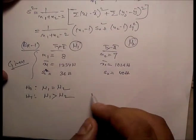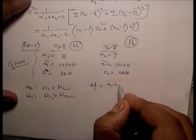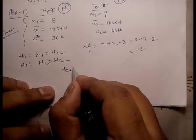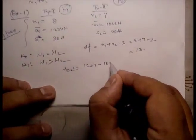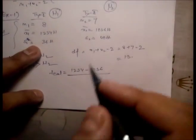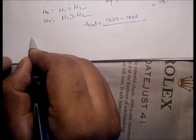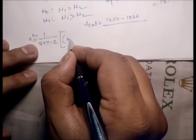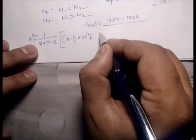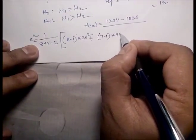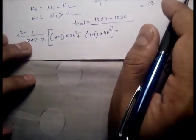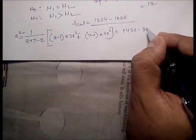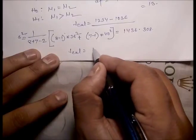We calculate the t statistic. Degree of freedom equals n1 plus n2 minus 2, that is 8 plus 7 minus 2 equals 13. First, s squared equals (1/(8+7-2)) times [(8-1) times 36 squared plus (7-1) times 40 squared], which gives s squared equals 1436.308.